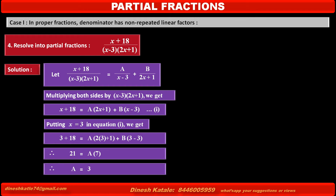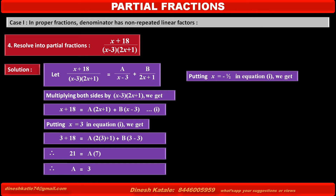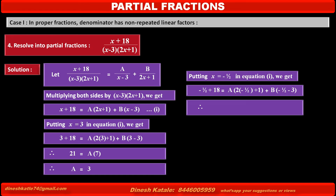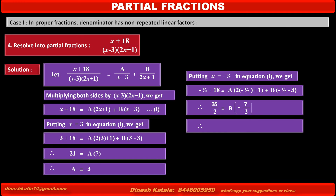To find the value of B, we eliminate A by putting x = -1/2 in equation 1. We get -1/2 + 18 = A(2×(-1/2) + 1) + B(-1/2 - 3). The left-hand side becomes 35/2. The first term on the right becomes 0, and the second term is B(-7/2). Therefore solving, B = -5.